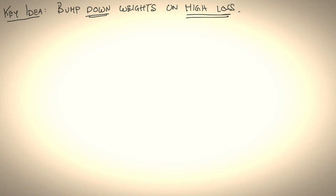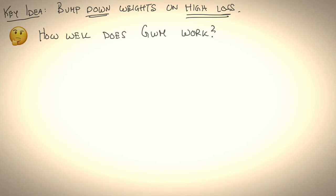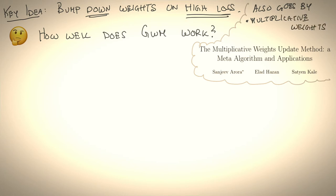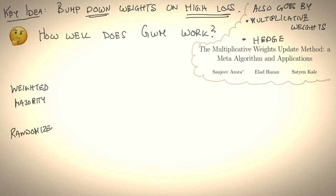The question we'll be interested in is just how well does GWM work? Before we discuss this, a quick aside: this algorithm is known by many names. It goes by multiplicative weights and also goes by hedge. For a more detailed analysis of the algorithm, I highly recommend checking out this paper by Aurora et al., which will be the basis of our lecture today.